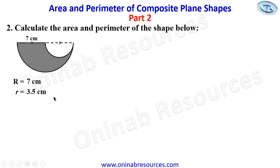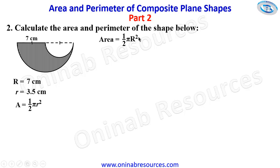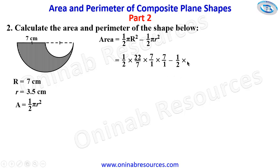This 3.5 can also be written as 7 over 2. The area of any semicircle is half pi r squared, since pi r squared is the area of a circle. So the area of the shape is: area of large semicircle minus area of small semicircle, which is half pi capital R squared minus half pi small r squared. Substituting: 1 over 2 times 22 over 7 times 7 over 1 times 7 over 1 for the large semicircle, minus 1 over 2 times 22 over 7 times 7 over 2 times 7 over 2 for the small semicircle.